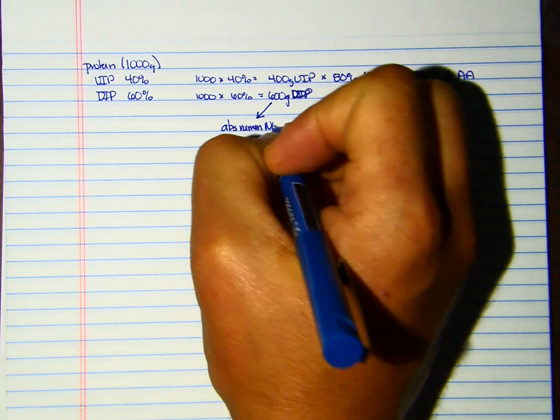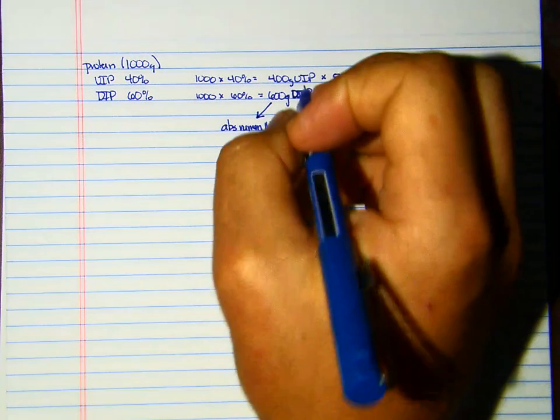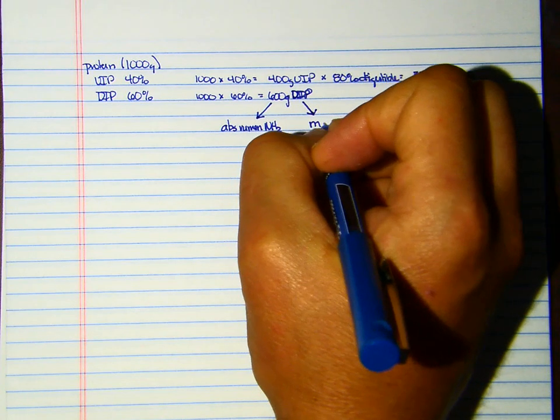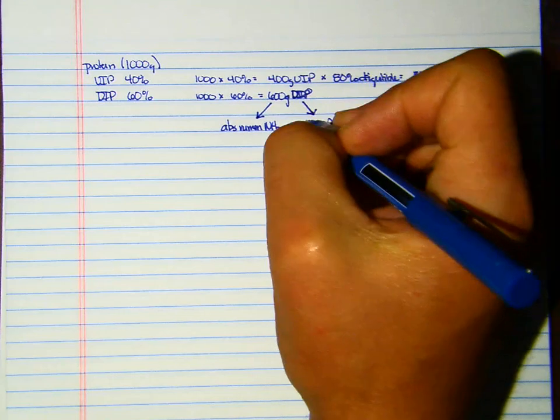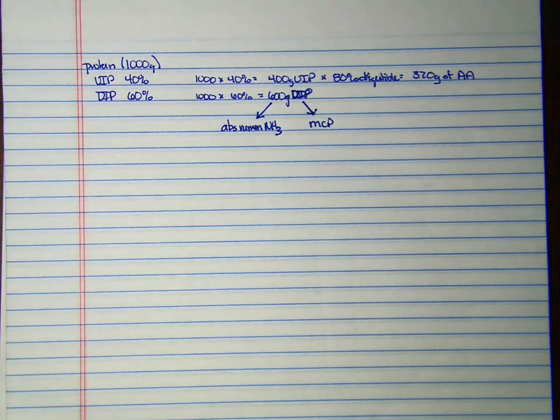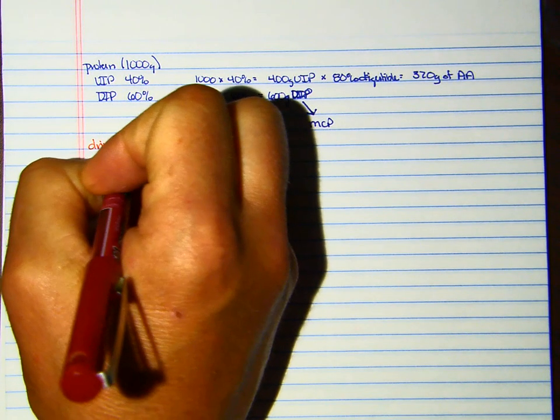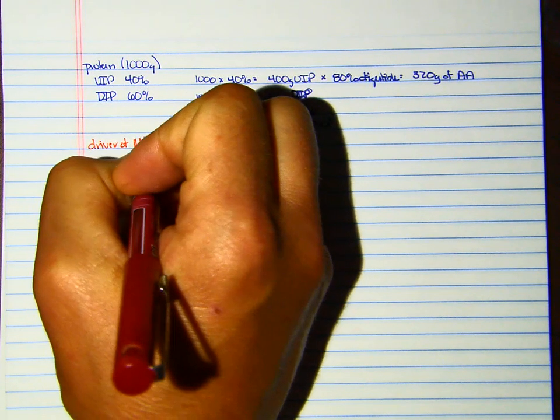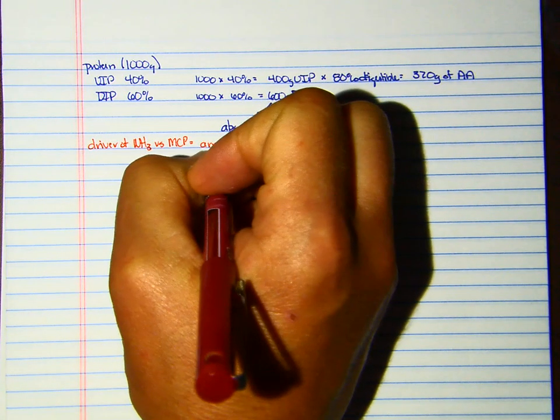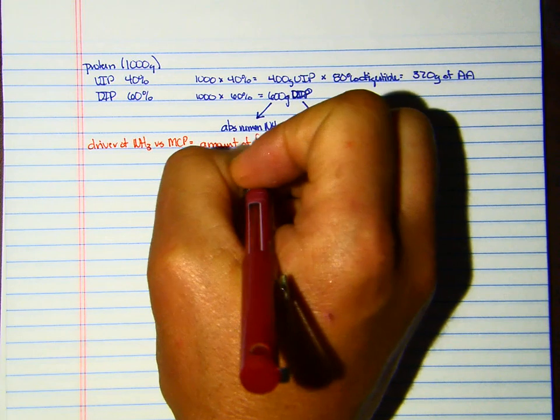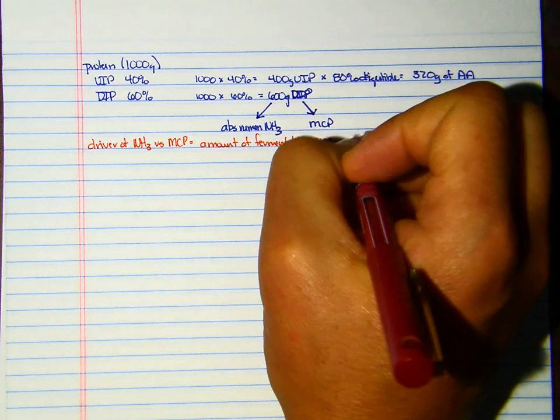What we don't know is we really have two ways that 600 grams can go. It could be absorbed in the rumen as ammonia—not terribly valuable to the cow—or it could be used to synthesize microbial crude protein.